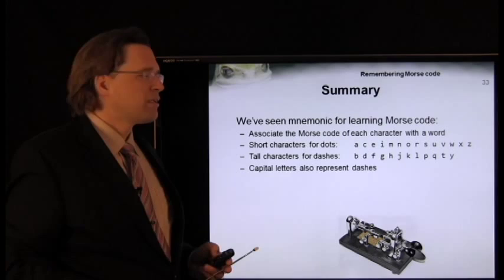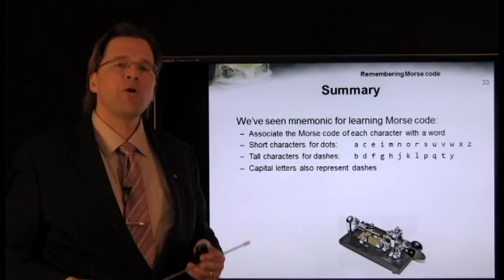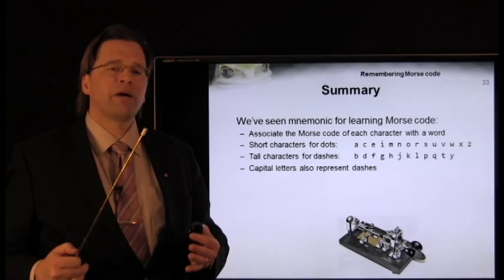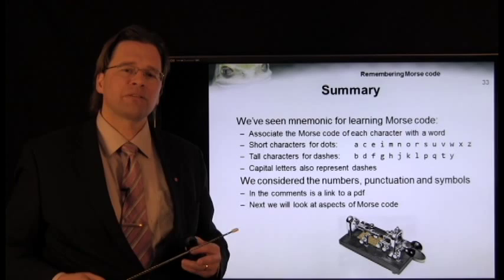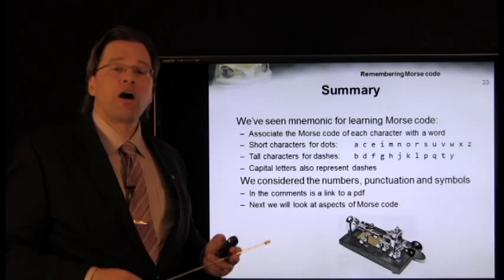So, in this second topic, we've continued the mnemonic for learning Morse code, where we associate each punctuation, letter, number, or symbol with a word or a phrase. Short characters represent dots, tall characters and capital letters represent dashes. In this talk, we considered numbers, punctuations, and symbols. In the comments, there's a link to a PDF, and next we're going to look at other aspects of Morse code.